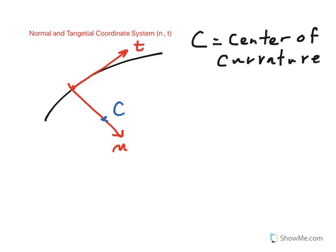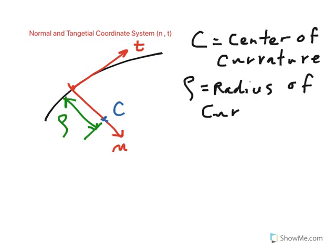And the radius of this curve at that instant is denoted by rho typically, or you can call it r. And rho is called radius of curvature.